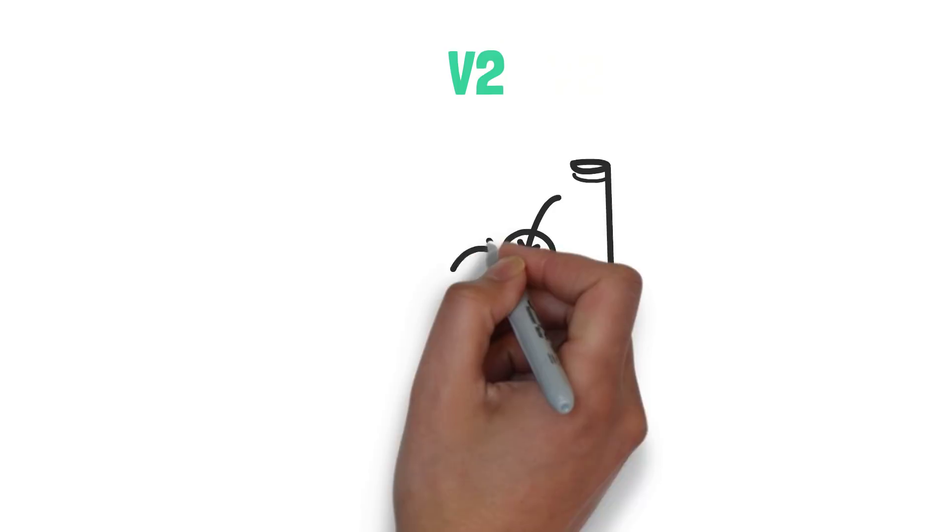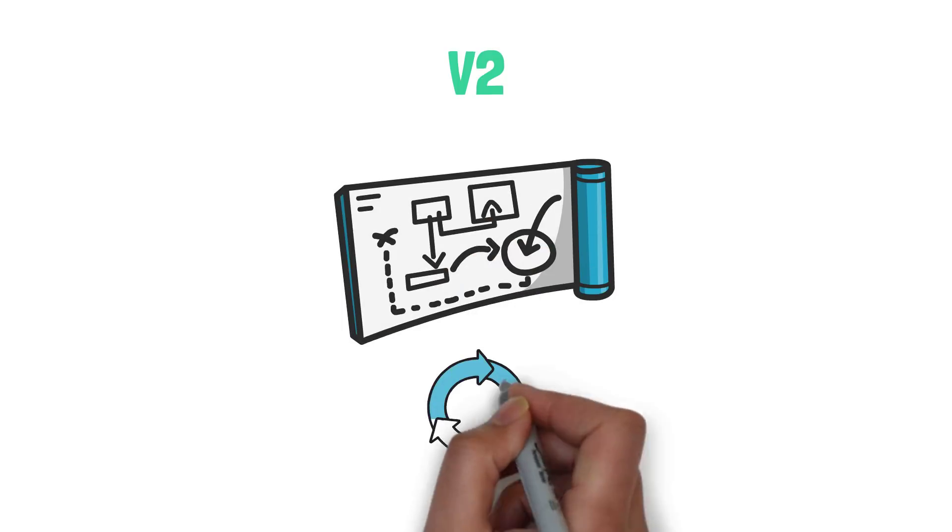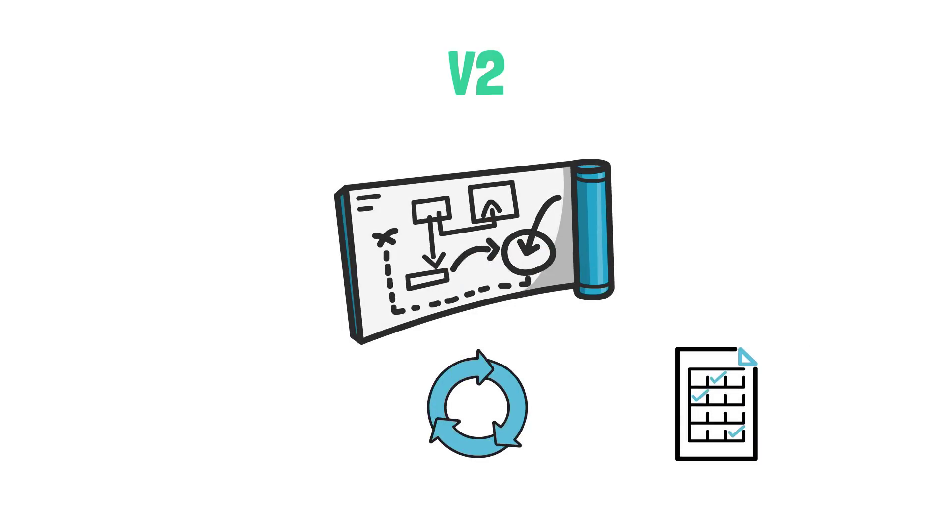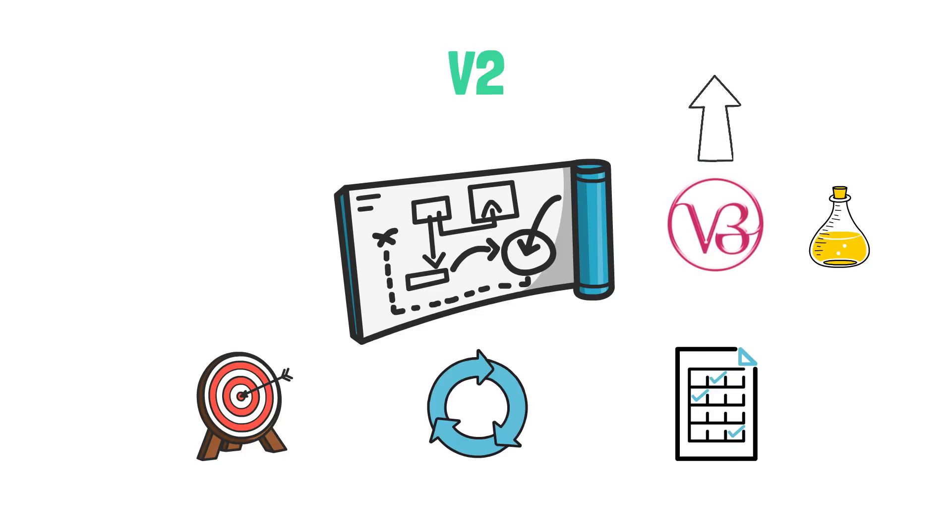V2 iterated on the initial design and introduced a new model for managing positions and executing trades that makes use of Uniswap V3 and its concentrated liquidity. And by the way, if you need a recap on how Uniswap V3 works, you can check my other video here.